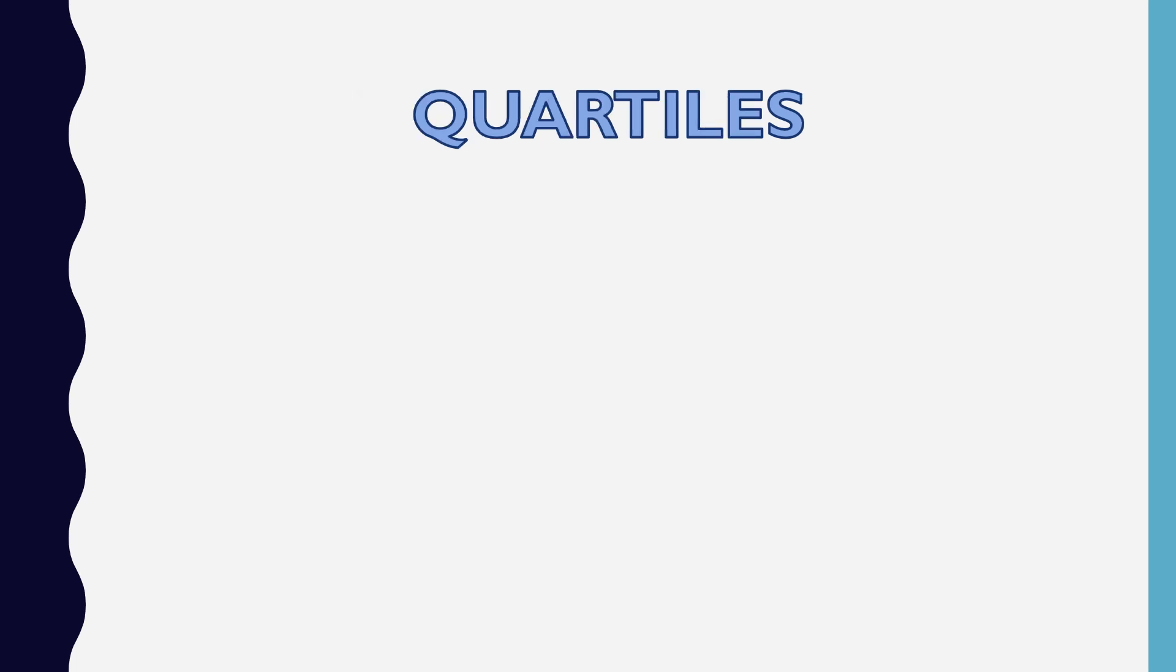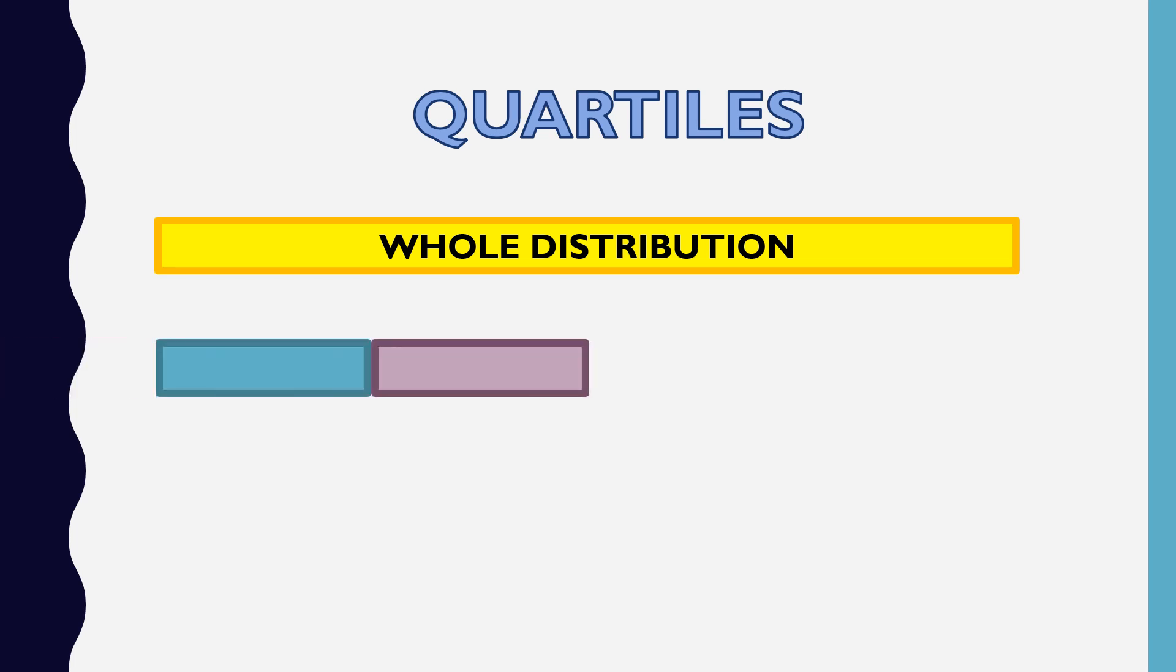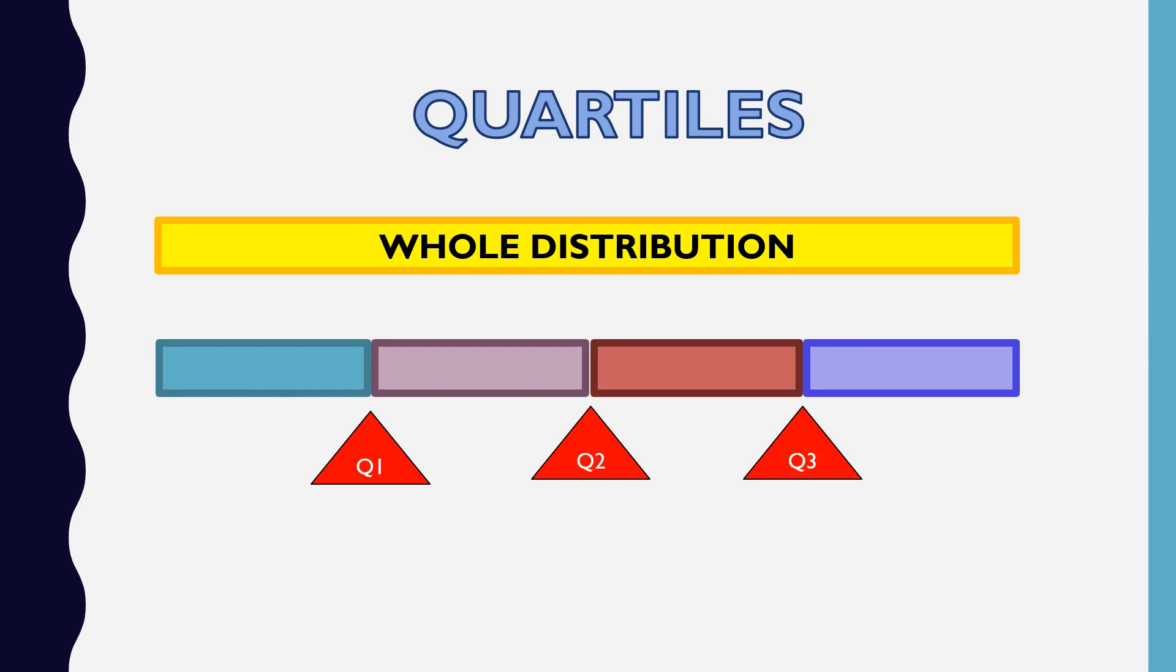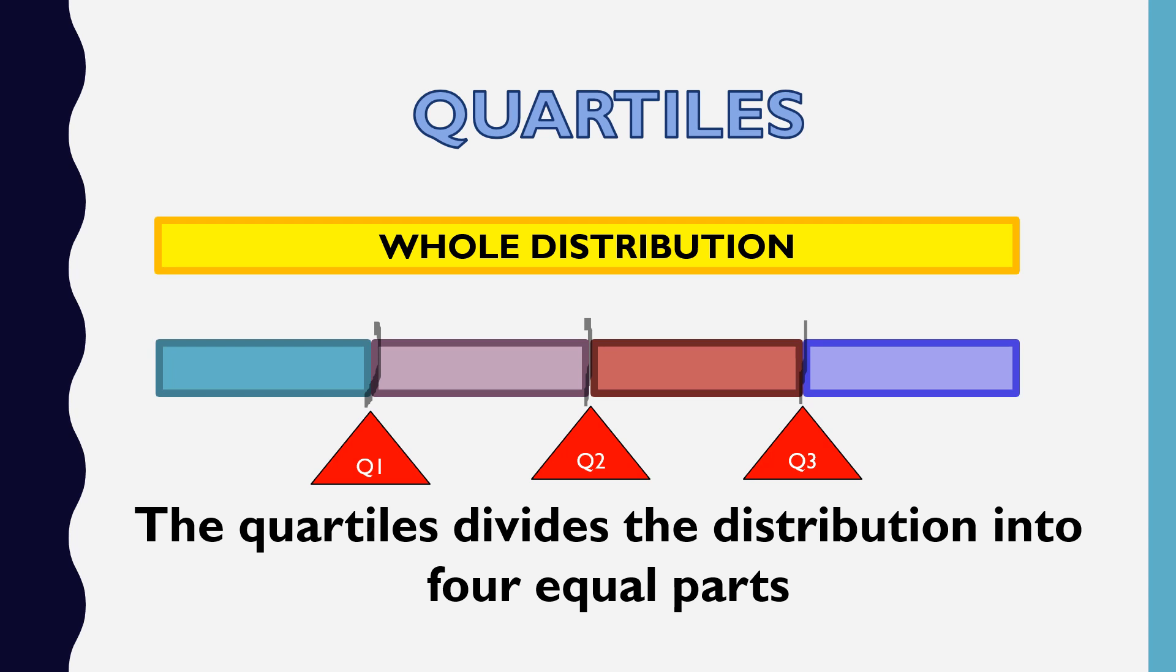Let's discuss about quartiles. If there's a whole distribution, ang ginagawa natin sa data sets or sa datas na meron tayo is to divide it into four equal parts. Yung makikita nyo yung partition na yan, tinatawag natin yung quartiles. May quartile 1, quartile 2, at quartile 3. The quartiles divide the distribution into four equal parts.